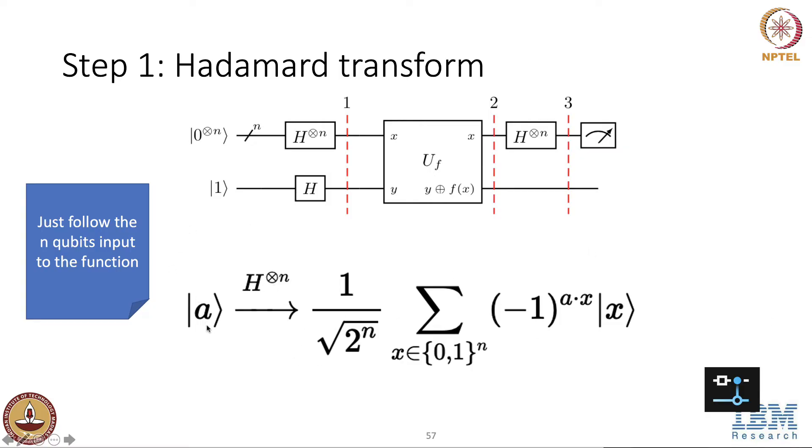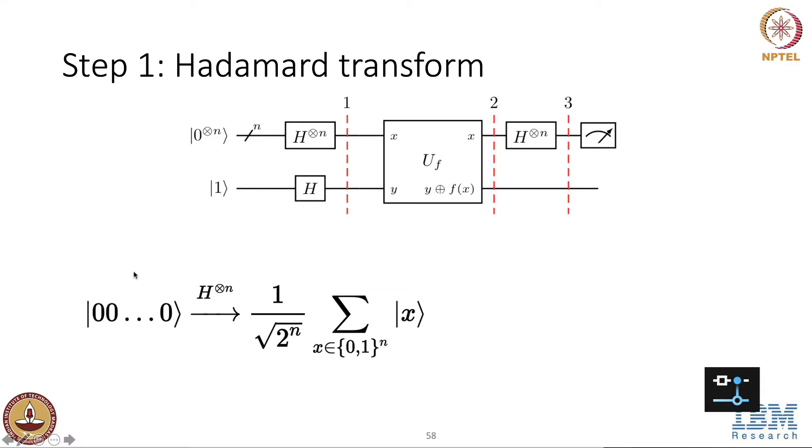I'm just giving the final expression that we write. Hadamard applied on a random state a is summation over all x minus 1 to the a dot x x. So now if you apply Hadamard on this state all 0, it's just 1 over root 2 to the n, summation over all possible states x. So that's the output of the first step.